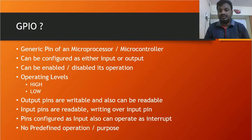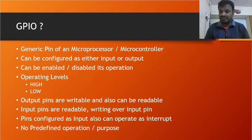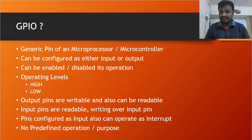GPIO is a generic pin of a microprocessor or microcontroller. A generic pin in the sense that it does not have any assigned functionality. In today's electronics, microprocessors have many custom interfaces like I2C, SPI, SDIO, and more. GPIO does not mean any specific interface — it can be a generic interface which can simulate any other custom interface by toggling or reading from that pin.